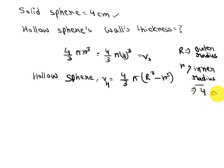Now this hollow sphere is cut in half, so we will get 2/3 π (R³ - r³).